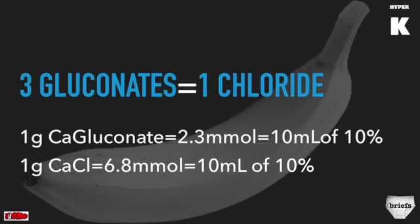The most common mistake I see is getting the calcium dose wrong. For patients who are not in cardiac arrest, give calcium gluconate — usually one or two vials of 10 mL of 10%, which is 2.3 millimoles per gram of calcium gluconate salt. For someone in cardiac arrest, you need more calcium: calcium chloride provides 6.8 millimoles per gram in 10 mL of 10%. If giving calcium gluconate in cardiac arrest, give two or three vials to achieve that higher dose.